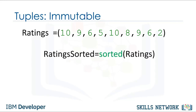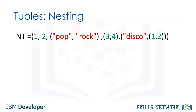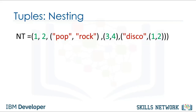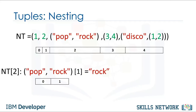For example, if we would like to sort a tuple, we use the function sorted. The input is the original tuple and the output is a new sorted list. A tuple can contain other tuples as well as other complex data types — this is called nesting. We can access these elements using the standard indexing methods. If we select an index with a tuple, the same index convention applies, and we can then access values in the tuple.